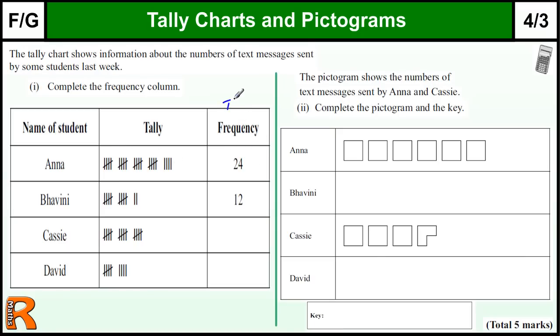The frequency is the word that we're supposed to use for the total. So the total for each row is the frequency. That's how often Annie sent a text message last week, so we've got to finish this off.